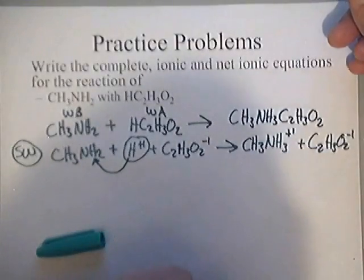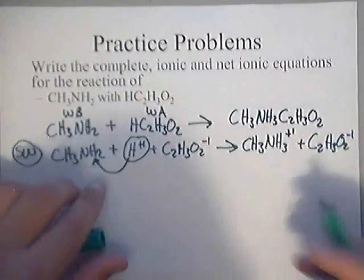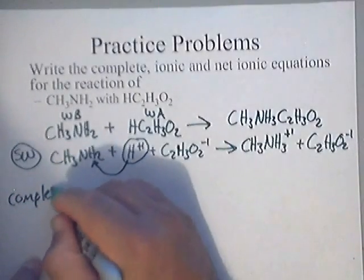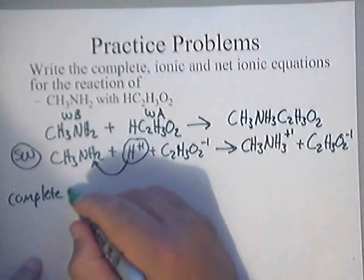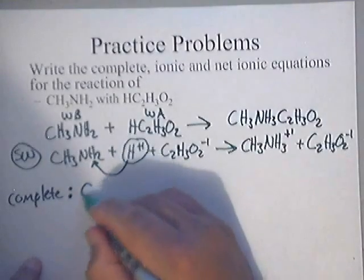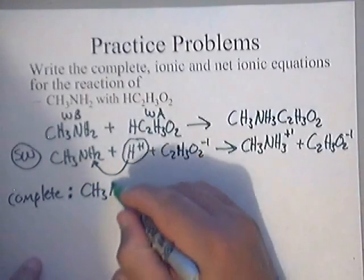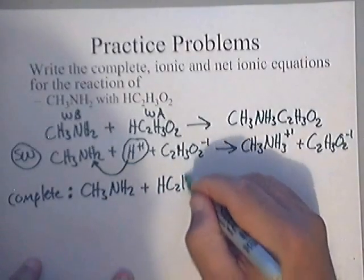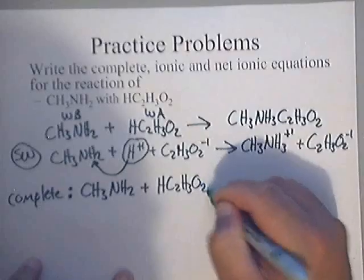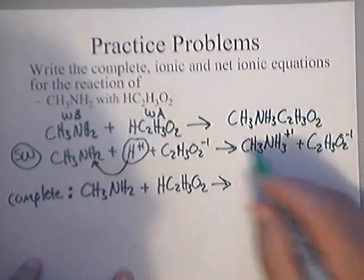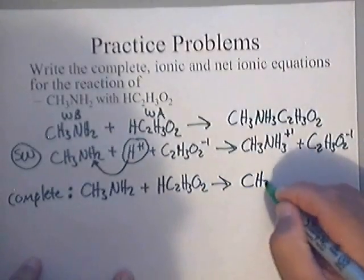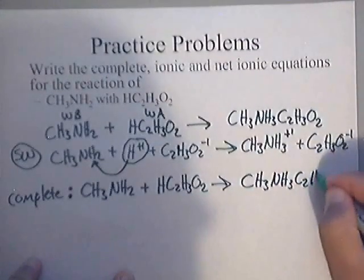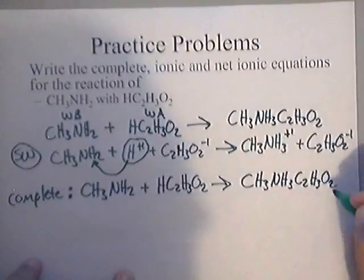Now this thing is balanced, and we're good. So let's write the complete. The complete is that again, just balanced. And luckily for us, this one's already balanced. So my complete is CH3NH2 plus HC2H3O2 yields that ugly product, which is CH3NH3C2H3O2. It's balanced.